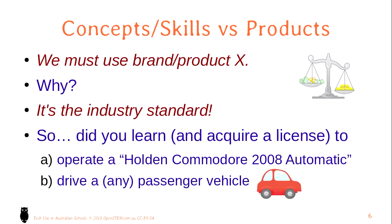People get taught very specifically the monkey steps — press this button, that button — to do a particular task in a particular version. That means they're not actually understanding what they're doing in the concept of a spreadsheet or word processor, so they can't translate naturally. If you learn a skill and a concept rather than a particular version of a product, that skill is generally applicable. A teenager should be able to open any word processor and find their way around — write a document, highlight text, add headings, save and print.